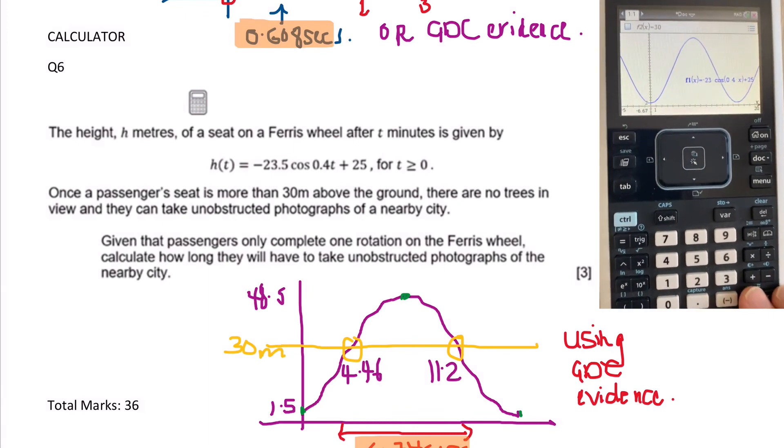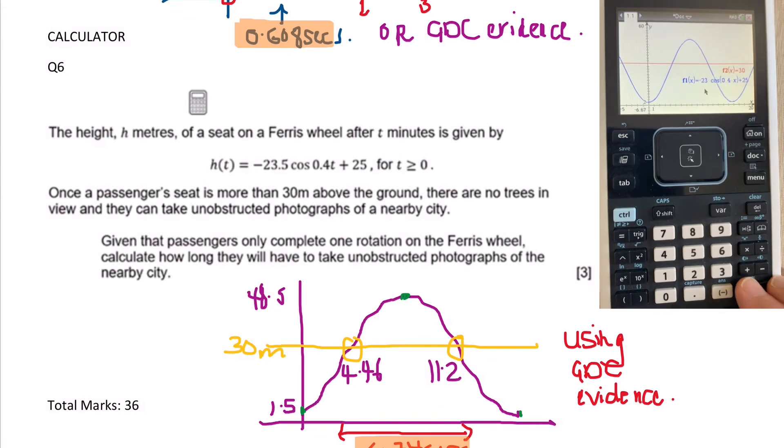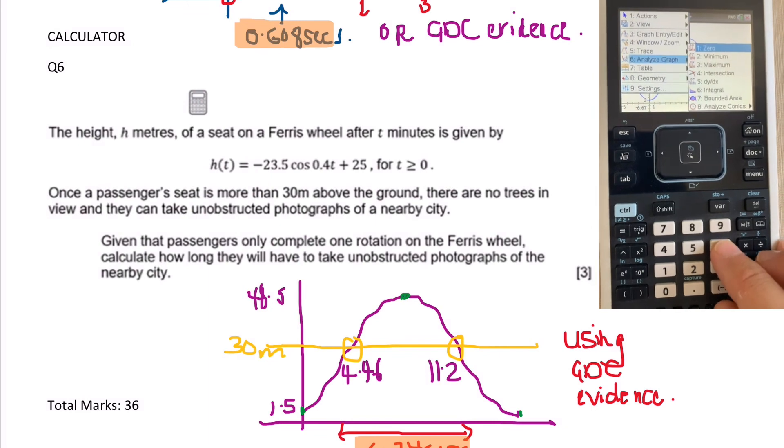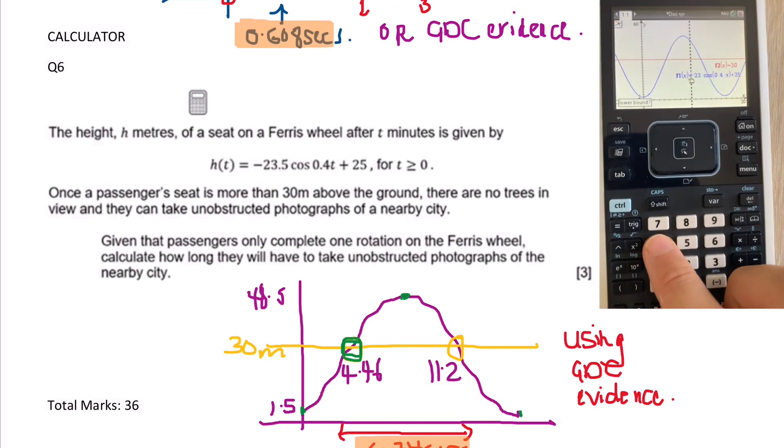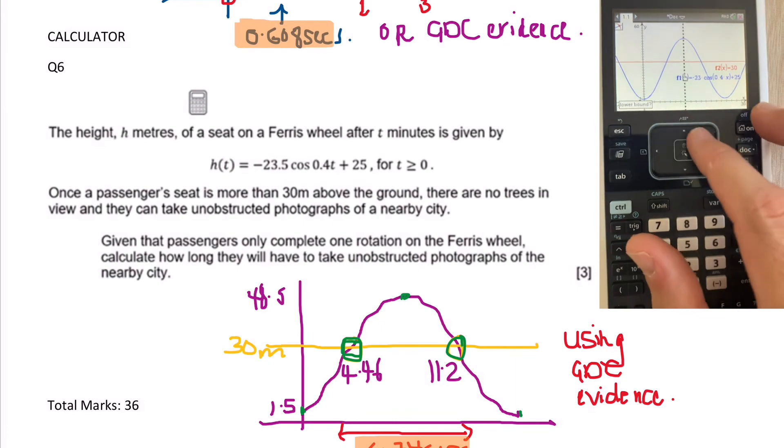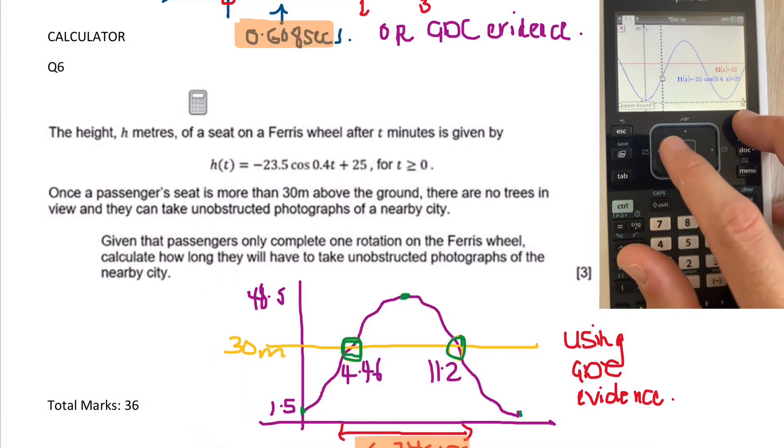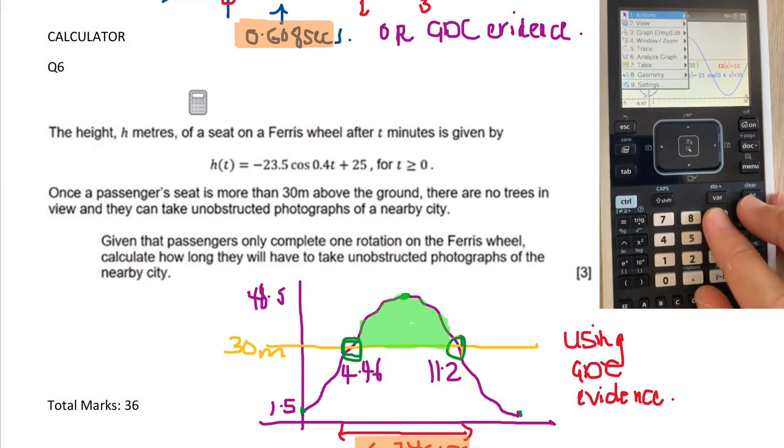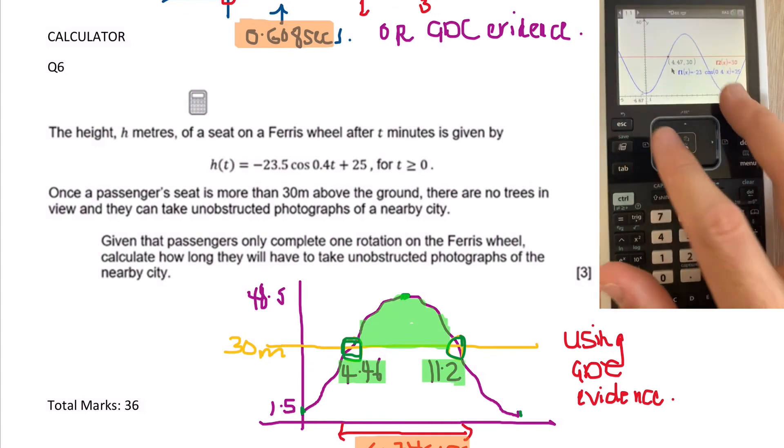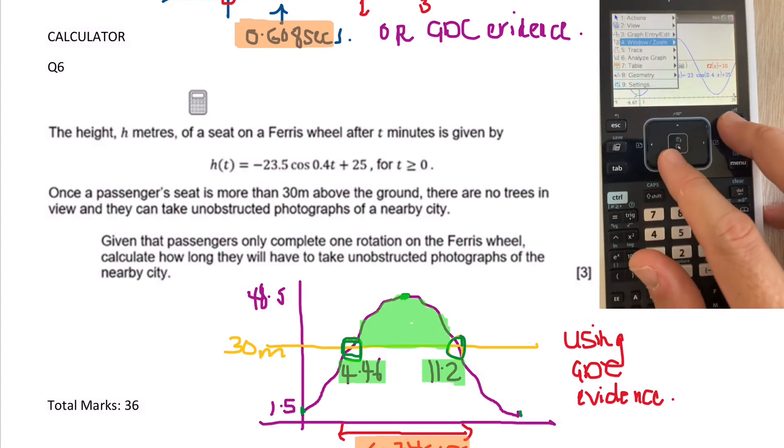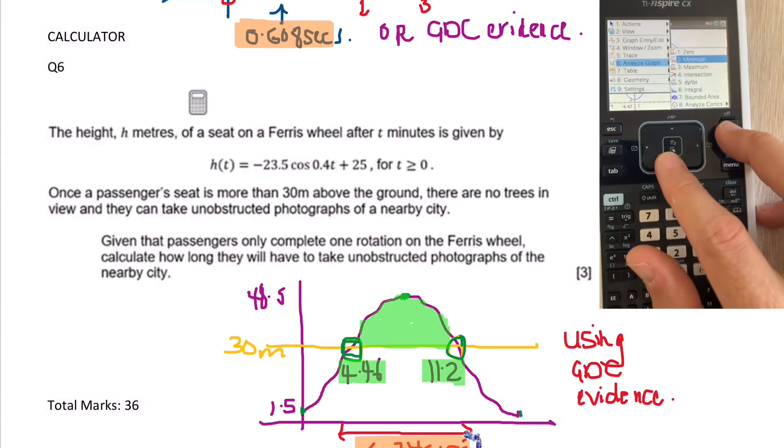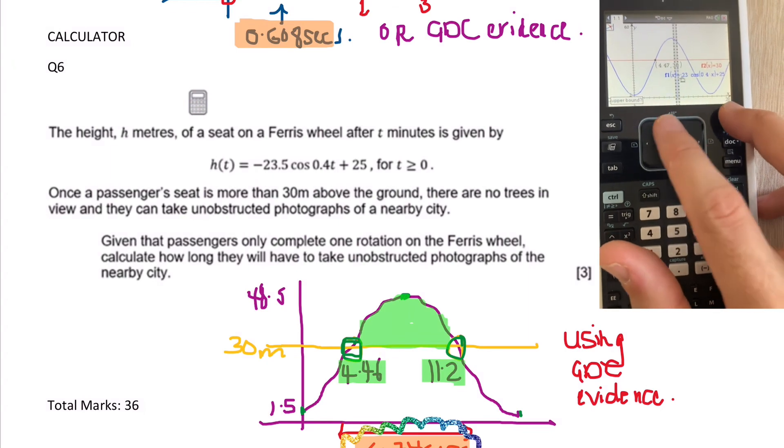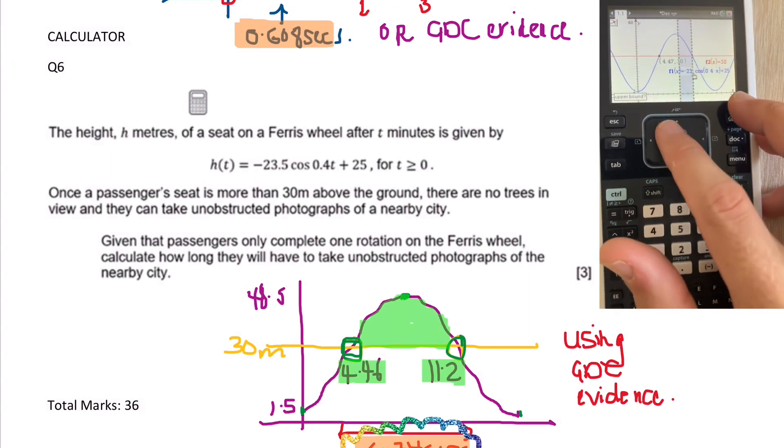So we need to do the same thing as we did in part B of the last question. We enter y is equal to 30, but this time we want to find two intersection points. Because anything under this area is above the trees. So from this time to this time gives you the final answer when you subtract them of 6.74 seconds. So the Ferris wheel is above 30 meters for 6.74 seconds.